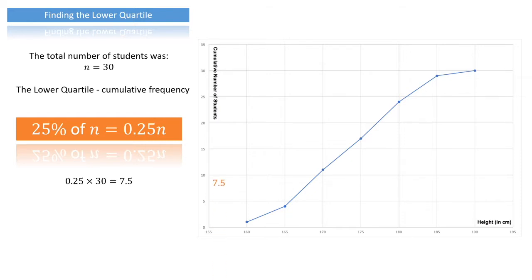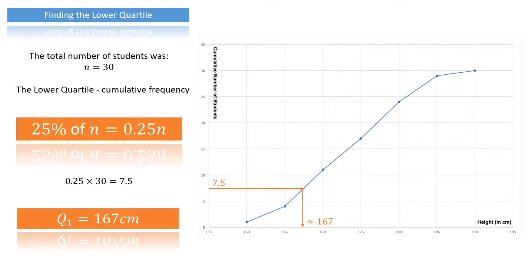The method is the same: we draw a horizontal line from the cumulative frequency axis up to the curve, and from that point on the curve we draw a vertical line down to read off the height. Looking at this, that value is approximately 167. So we write the lower quartile, Q1 (first quarter), equals 167 centimeters. This means 25% of our students measure less than 167 centimeters, and 75% are taller than 167 centimeters.